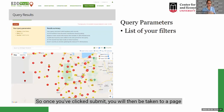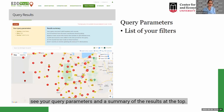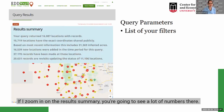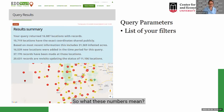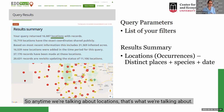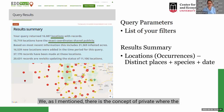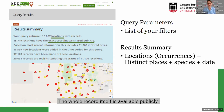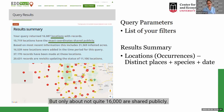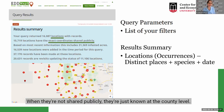Once you've clicked Submit, you'll be taken to a page showing the map and a summary of results at the top. Your query parameters are on the left. When we talk about locations, we're talking about an occurrence — a distinct place, species, and date. There's also the concept of private records, where coordinates are not shared publicly; the record itself is available publicly, but at the county level only. For example, Jerry's County has over 6,000 locations with records, but only about 16,000 coordinates are shared publicly.